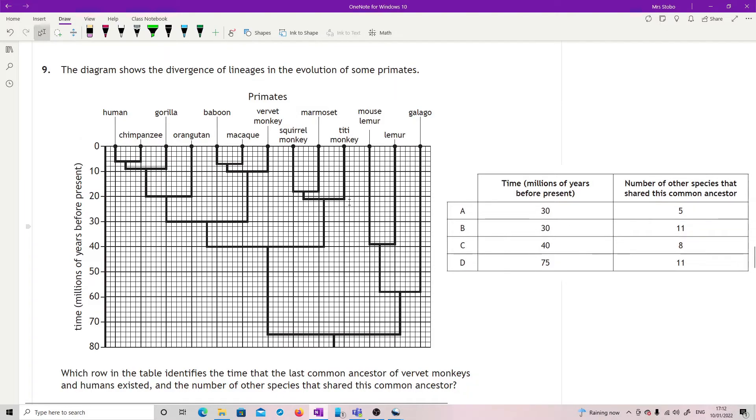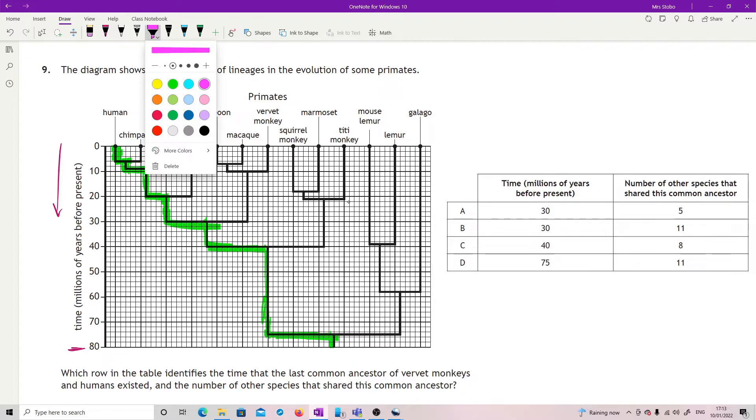Question nine: phylogenetic tree. The diagram shows the divergence of lineages in the evolution of some primates. We've got time in millions of years before the presence working back that way, so this is the longest time ago. Which row in the table identifies the time that the last common ancestor of vervet monkeys and humans existed and the number of other species that shared this common ancestor? I think highlighters work best for this one. So we're looking for humans - let's just track the human one down. I'm tracking the human all the way back down to the last bit that we have information on. And then we're looking for the vervet monkey, here we go. So I'm looking for when they connect - wherever they connect, I'm like oh right, here this was my last common ancestor of these two.